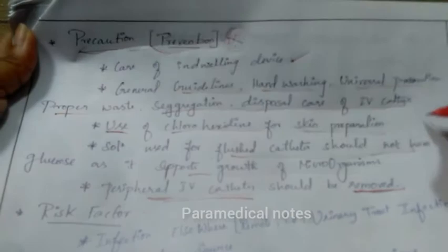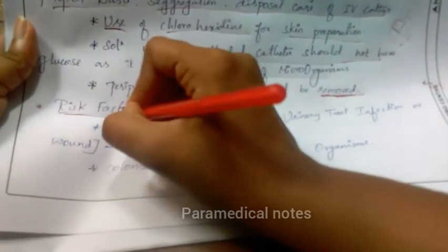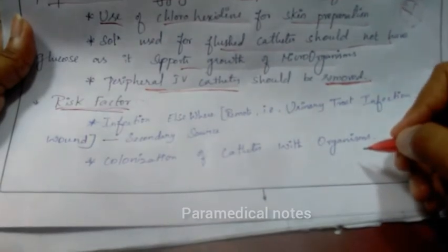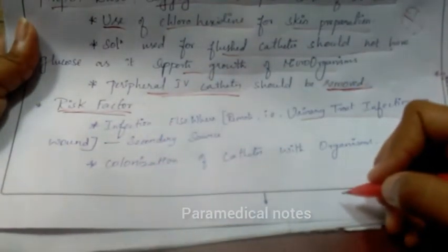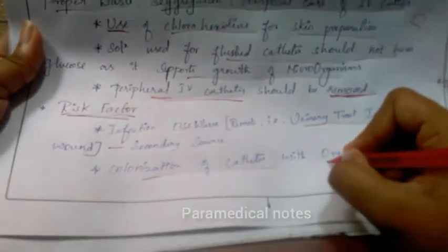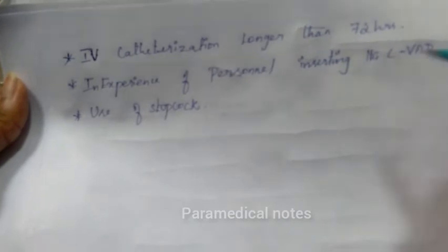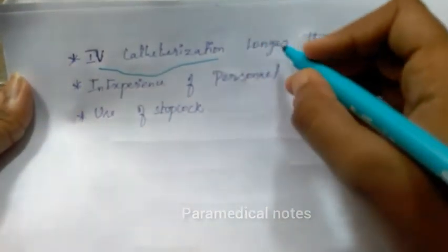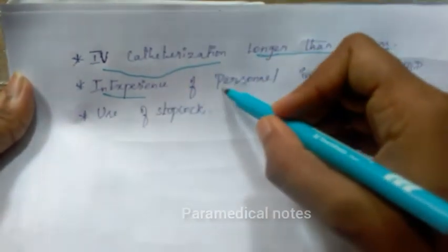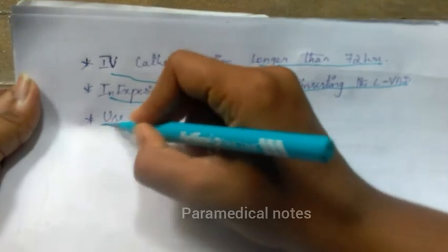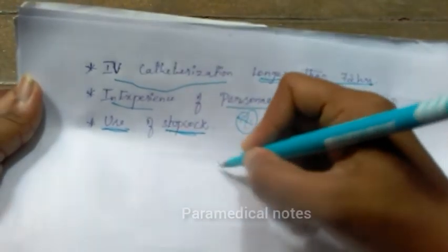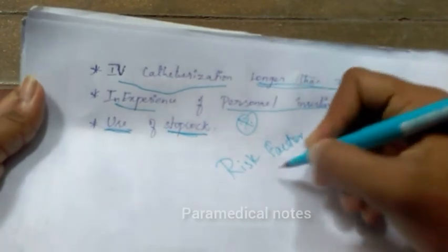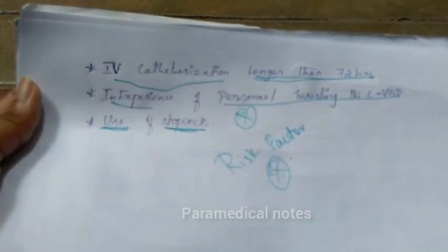Finally, risk factors. First, infection elsewhere — for example, a remote urinary tract infection. If infection is present somewhere else, it can lead to additional infections. Second, IV catheterization for longer than 72 hours. Third, inexperienced personnel inserting the central venous catheter. Fourth, use of stopcocks. These are the key risk factors we should write.